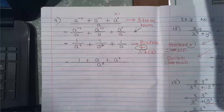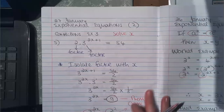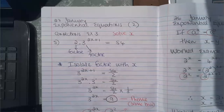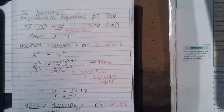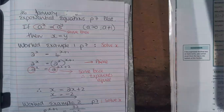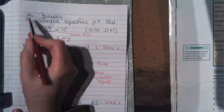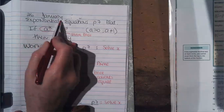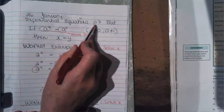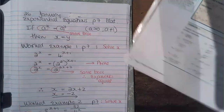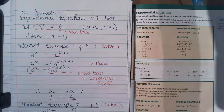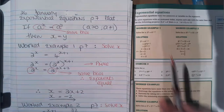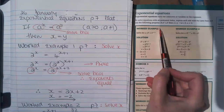Let's move on to the next part. Our heading is 26th January — Exponential Equations, page 7 in your left handbook. We are going to look at worked example 1 and worked example 2. For this one, the rule we are using: if a to the power of x equals a to the power of y and we have the same base, then x equals y.